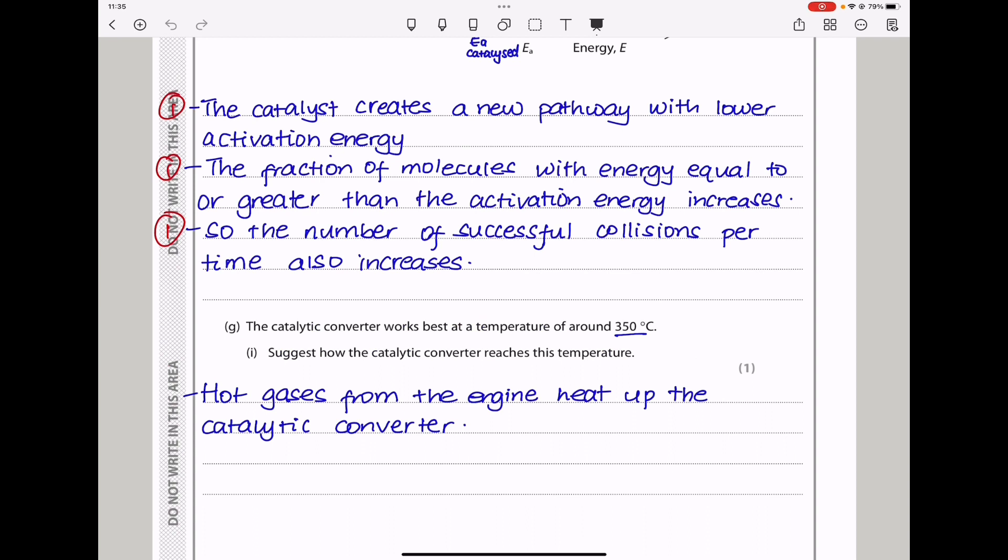In part C, they say the catalytic converter works best at a temperature of around 350 degrees Celsius. Suggest how the catalytic converter reaches this temperature. Now remember there is an engine and the engine is heating the fuel. Hot gases leave the engine and they're going to be hot as they reach the catalytic converter. So I said hot gases from the engine heat up the catalytic converter.